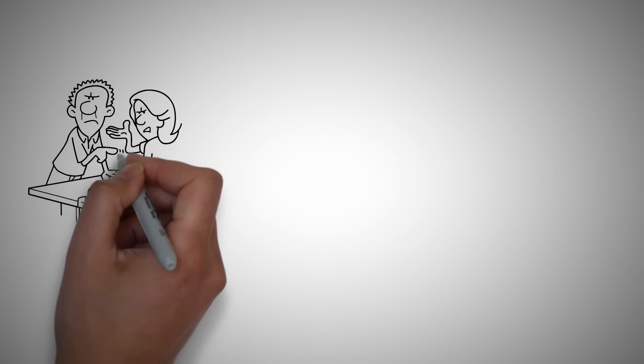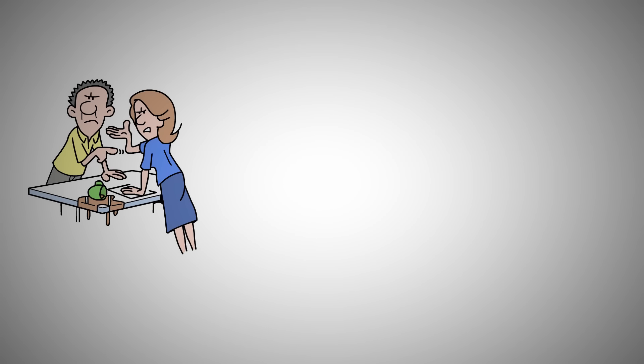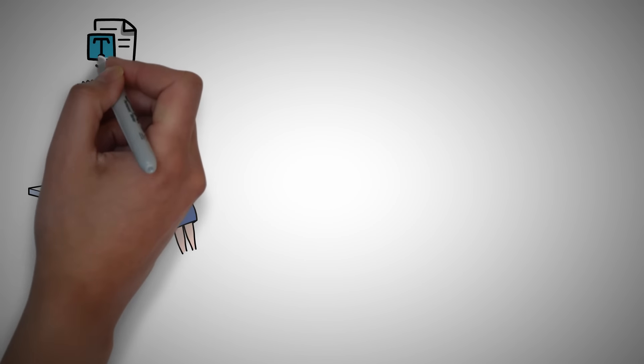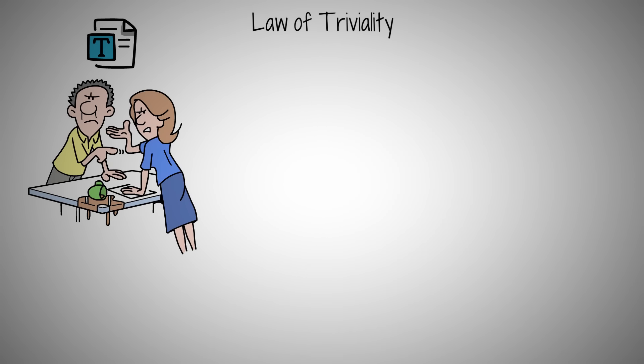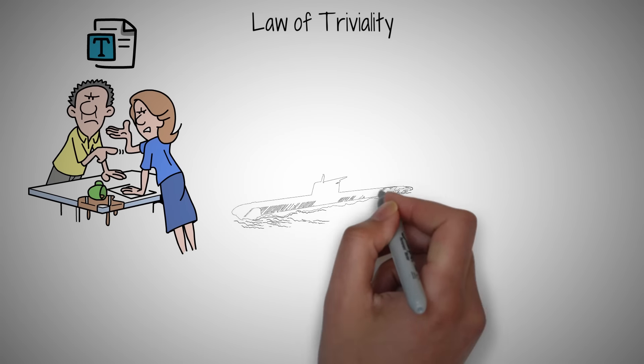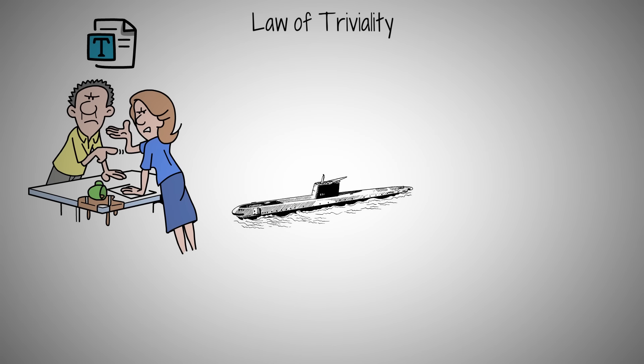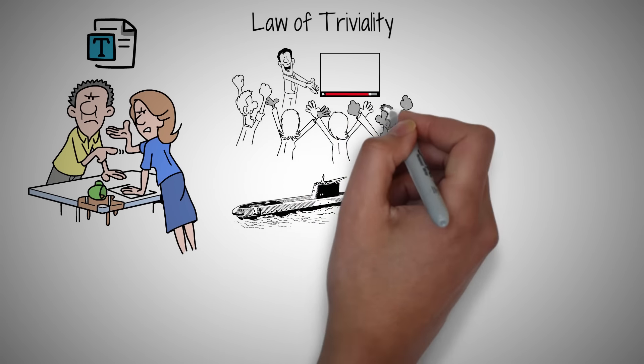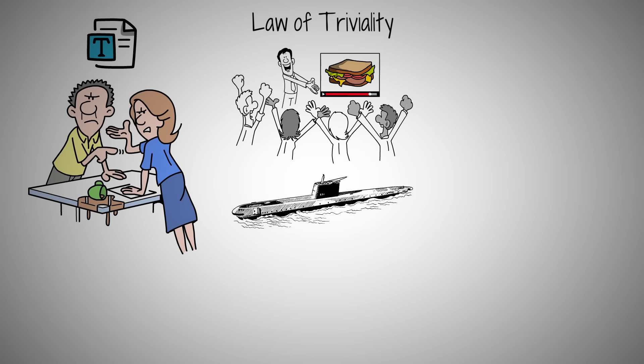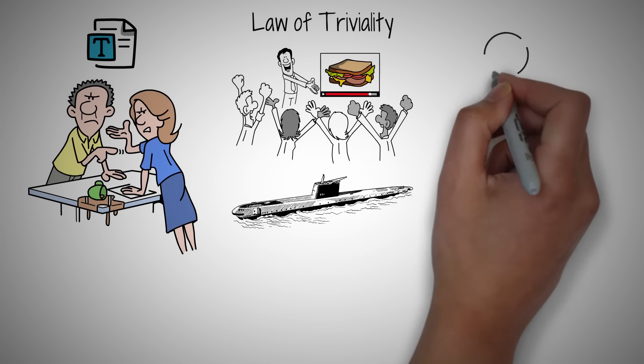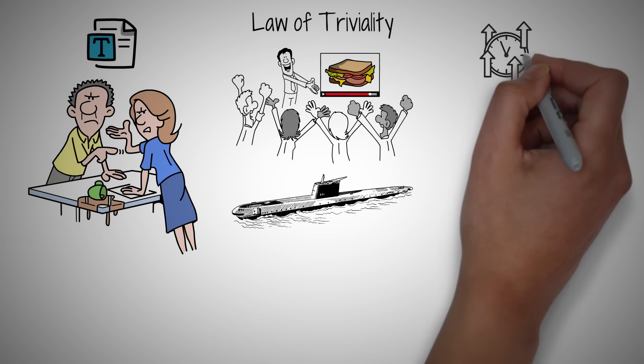Why do we often argue over things like the font in a report more than its content? This preference for trivial over complex issues is known as the law of triviality. Picture the British Navy building a nuclear submarine, yet the committee spends most of its time discussing what to stock in the canteen. It sounds absurd, but it's a real example of how we often focus on trivialities when faced with overwhelming complexity.